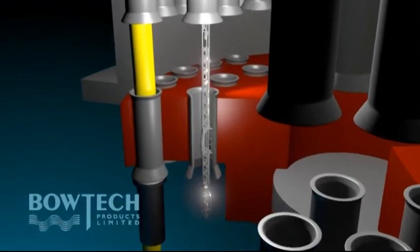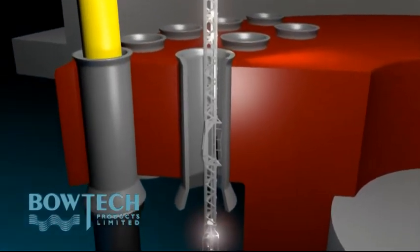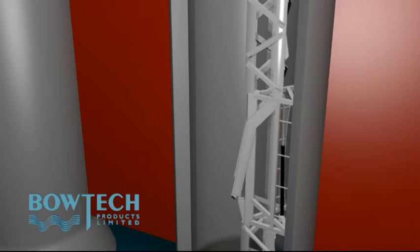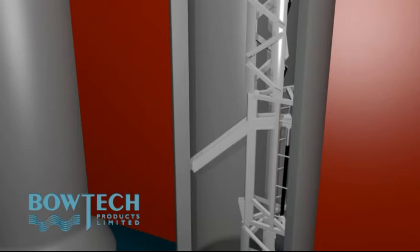Once the deployment tool is correctly positioned and orientated within the lower iTube, a hydraulic locking mechanism enables the tool to be firmly locked in place, providing a stable platform for the camera systems.